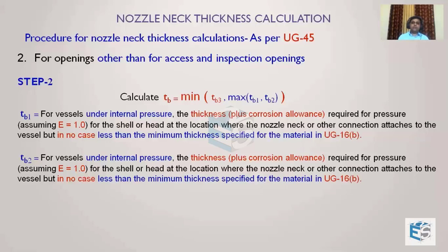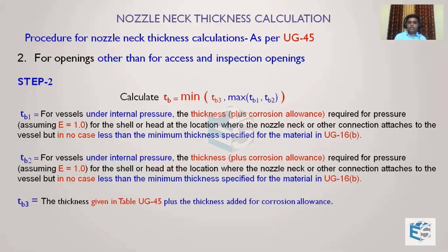So T_B2 uses the same formula as T_B1, only replacing internal pressure with external pressure — we do not separately calculate thickness for external pressure of the cylinder using UG28 methods. Then T_B3 is the thickness from table UG45 plus corrosion allowance.